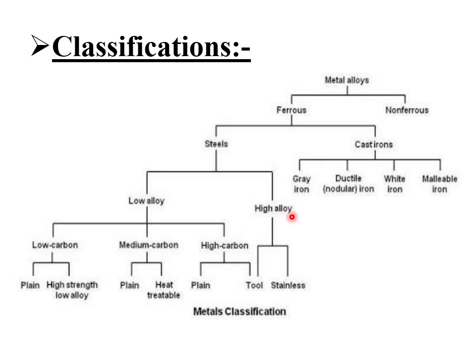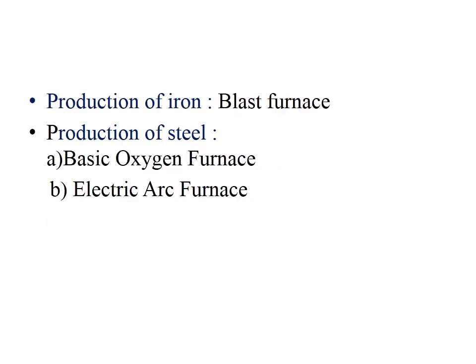High alloy steel, depending on the number of chemical elements and their volume fractions, can be further divided as tool steel or stainless steel. Ferrous materials are derived through a blast furnace — this is part of extractive metallurgy, which deals with minerals and the mining of materials.